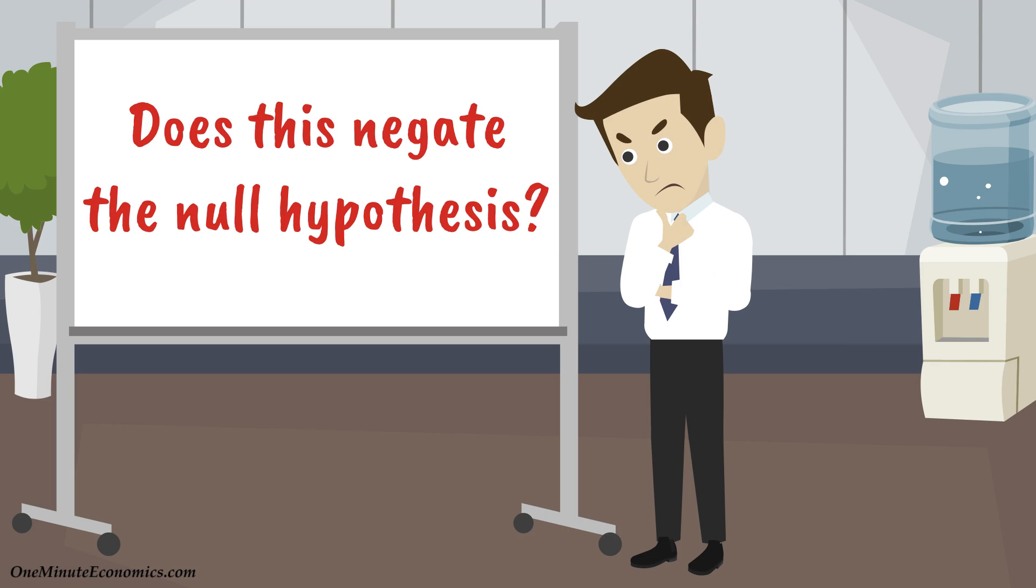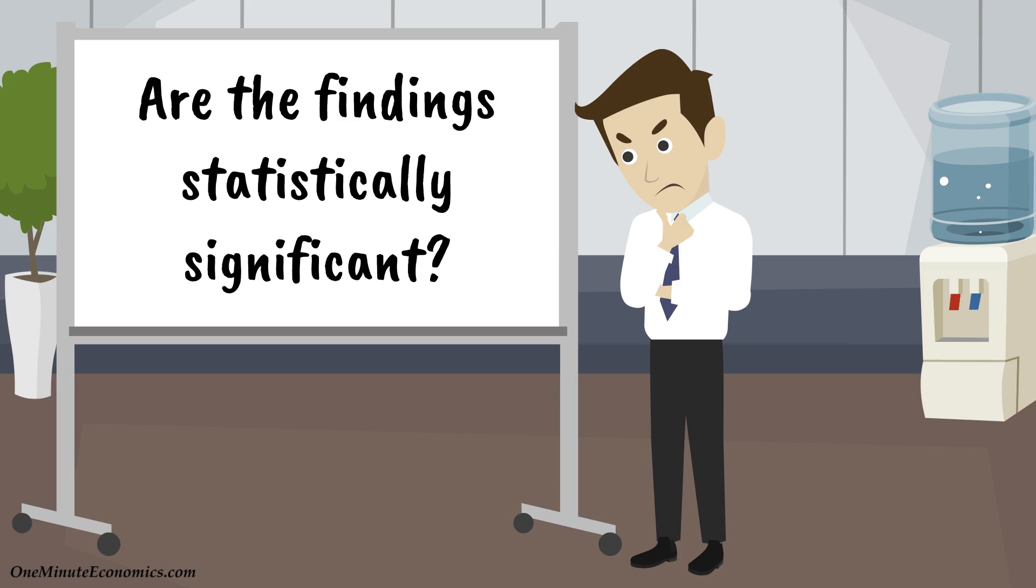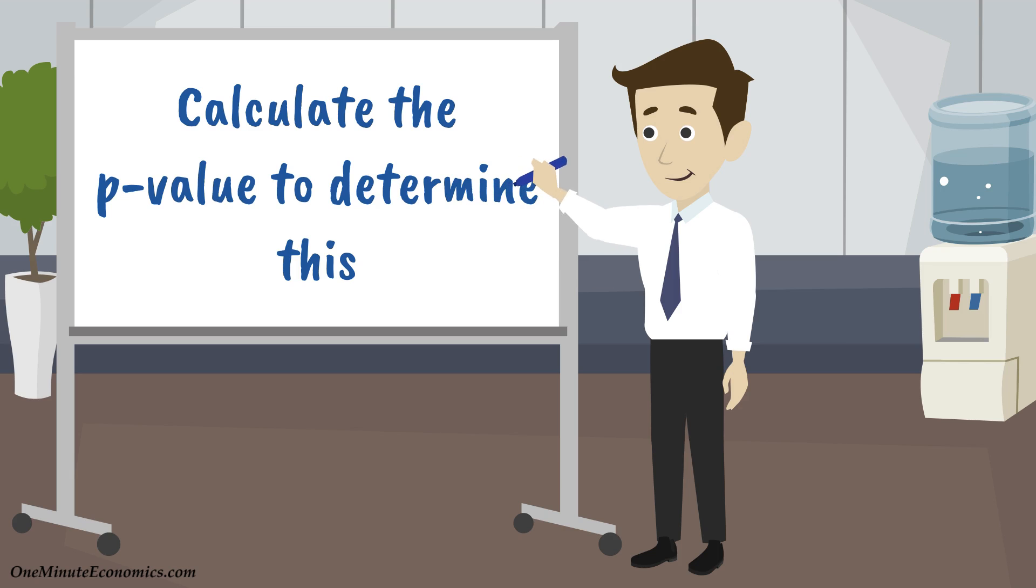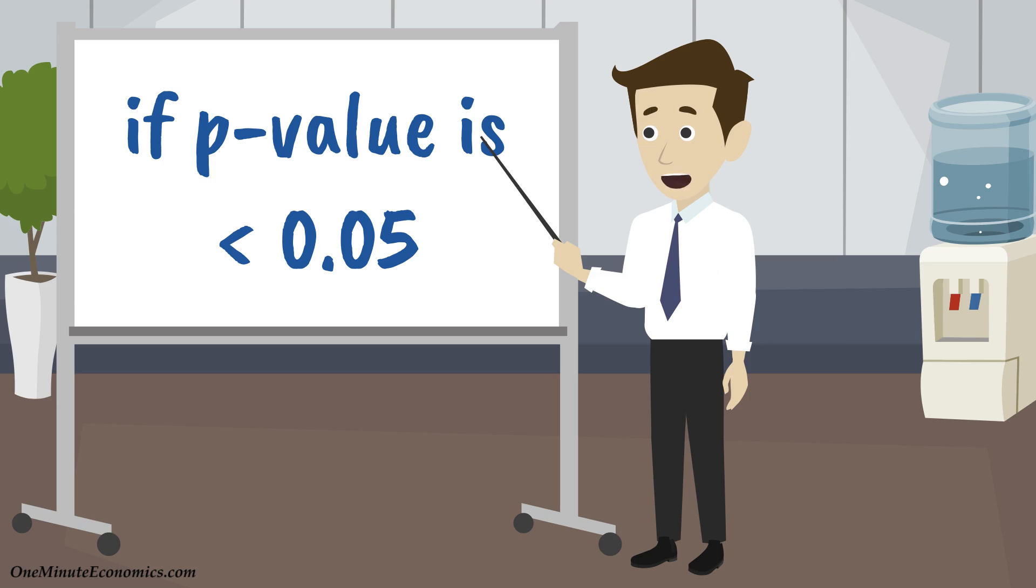Is this enough to negate the null hypothesis? Well, no, because we also have to determine whether the findings are statistically significant. To do this, we calculate the so-called p-value, which is a number between 0 and 1 that lots of applications easily generate for us based on the data we provide.